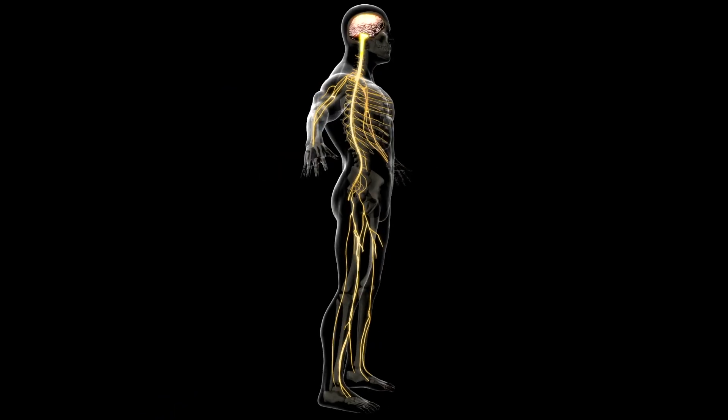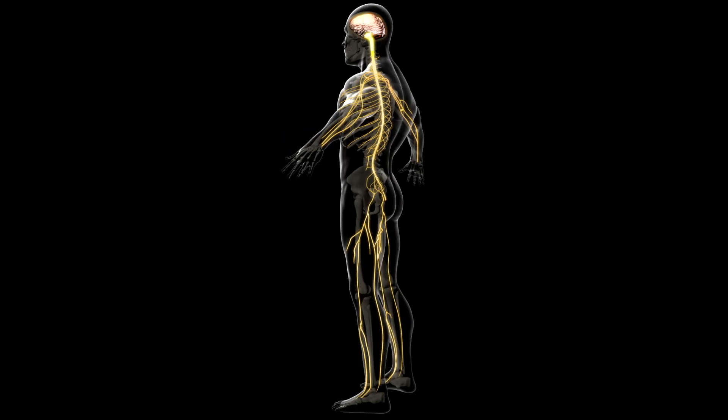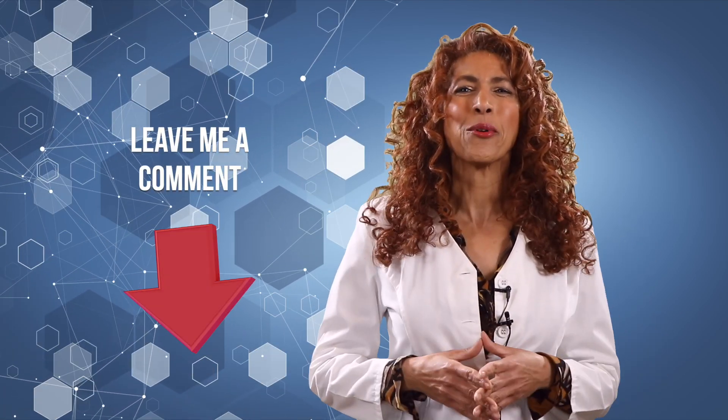And second, we have the peripheral nervous system, which is comprised of all the other nerves. So what is peripheral neuropathy and can you guess which nervous system it falls into? Leave me a comment below and tell me which nervous system you think it belongs to.